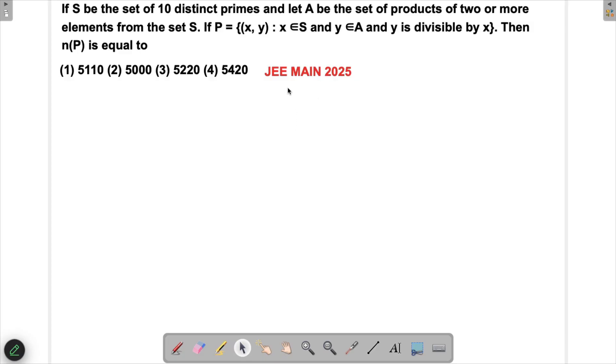Let's solve a problem which appeared in JEE Main 2025. This question is saying that S is a set of 10 distinct primes and let A be the set of products of two or more elements from the set S. That's the key point: set of products of two or more elements from the set S.